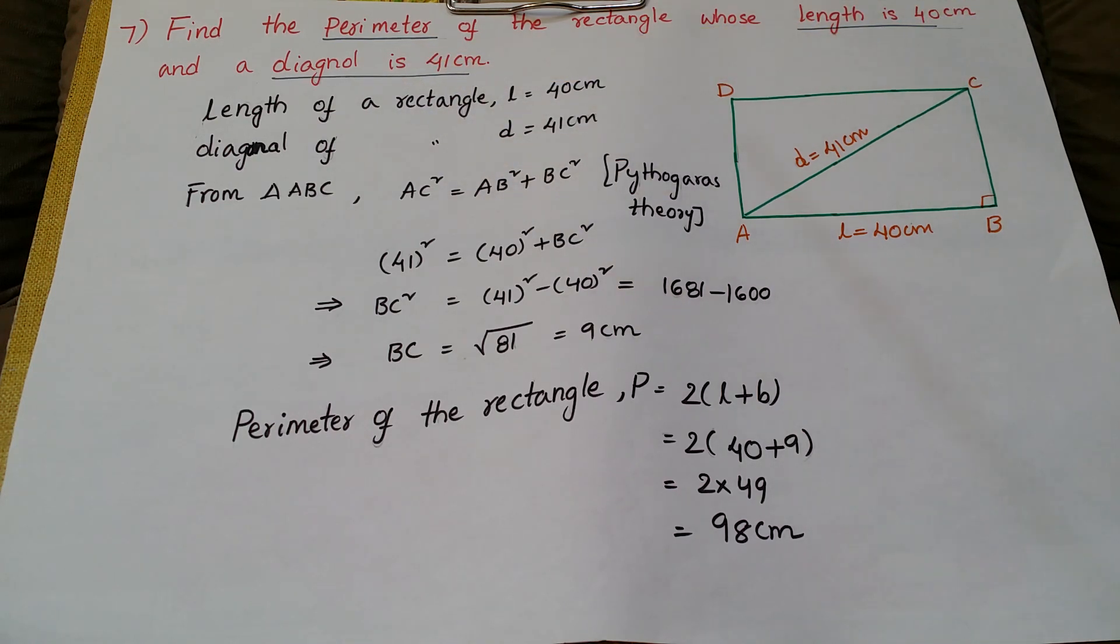So first, draw this rectangle ABCD and diagonal is AC. They have given AB is 40 centimeters and diagonal is 41 centimeters. If you observe here, there is a right angle triangle ABC.